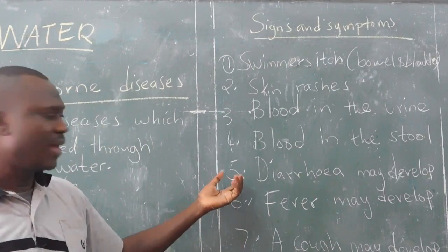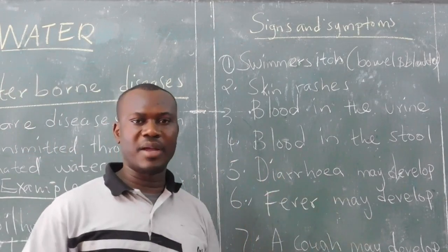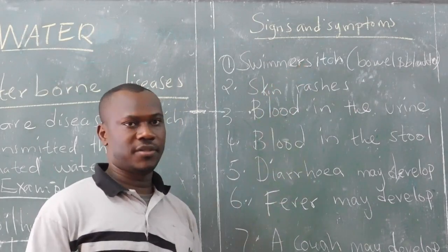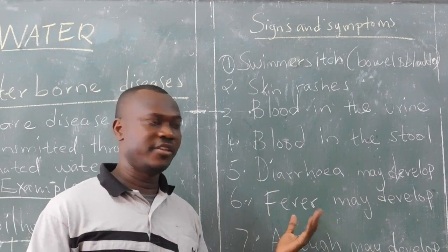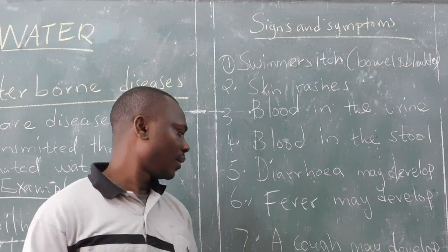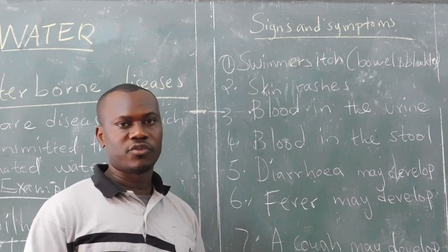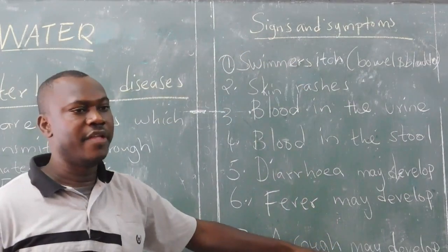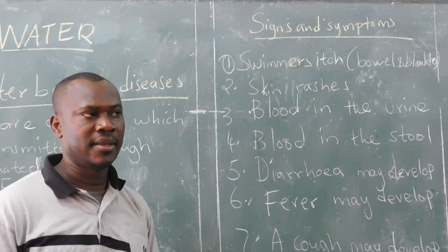Number five: it might develop into diarrhea. You might start having diarrhea when you have these worms. Also, some fever might develop — you can feel the body temperature rise — and a cough might also develop. Learners, when you see these signs, you need to be tested for bilharzia disease.